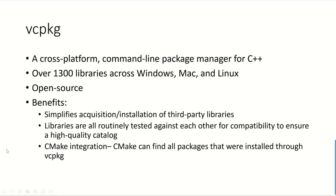Those are the general steps for configuring a CMake project in VS Code. Now let's take it one step further and look at how we integrated vcpkg with CMake Tools to manage all of SuperTux's dependencies. vcpkg is a cross-platform command line package manager for C++. There are over 1,300 libraries supported in the vcpkg catalog across Windows, Mac, and Linux. It is open source. First, it simplifies the acquisition and installation of third-party libraries — all you need to do is run vcpkg install and then the name of the library from the command line. The libraries are all routinely tested against each other for compatibility. You can also integrate CMake with vcpkg so that CMake can find all packages installed through vcpkg when configuring and building your project.